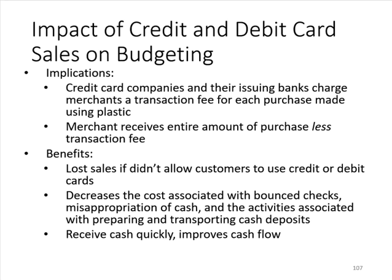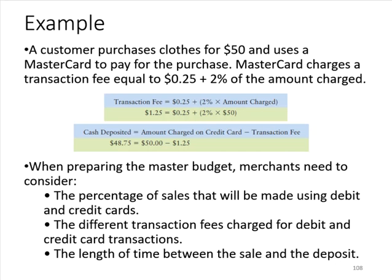Beginning on October 1, 2011, the Federal Reserve set a cap on the debit card transaction fees that banks can charge merchants. In anticipation of this, a credit card sale would be shown in the budget as follows: a $50 sale would be shown in the sales budget in the month of sale, the $1.25 transaction fee would be shown in the operating expense budget in the month of sale, and the $48.75 would be shown as a cash receipt on the cash collections budget in the month of collection, which is usually one to seven days after the actual sale.